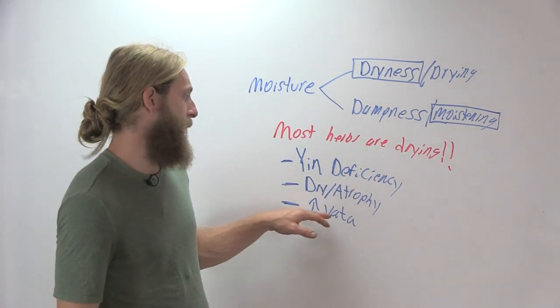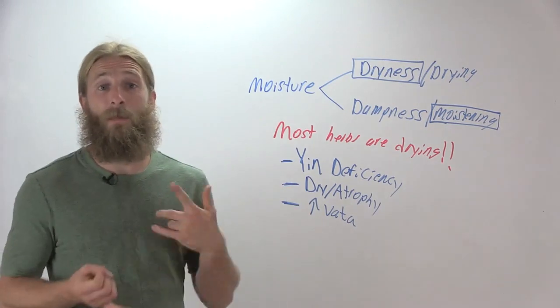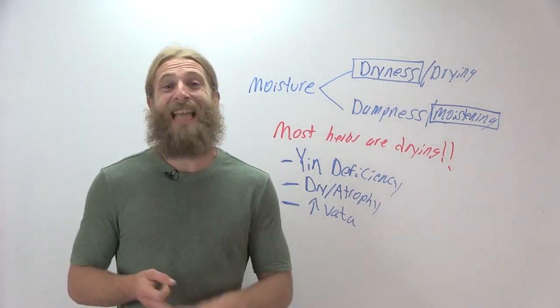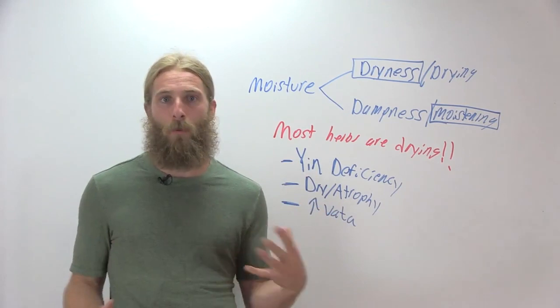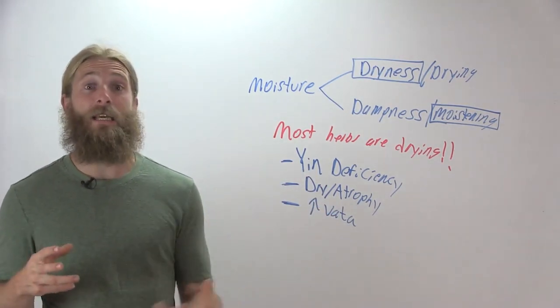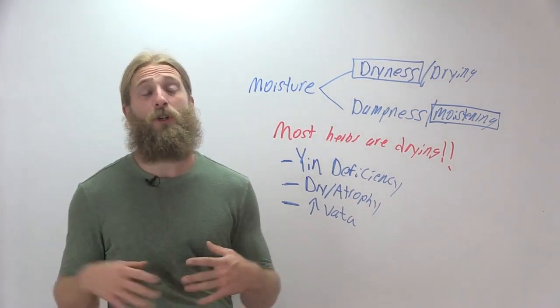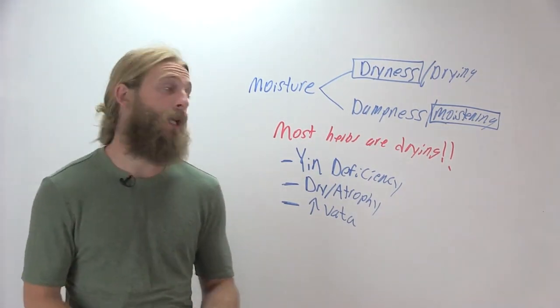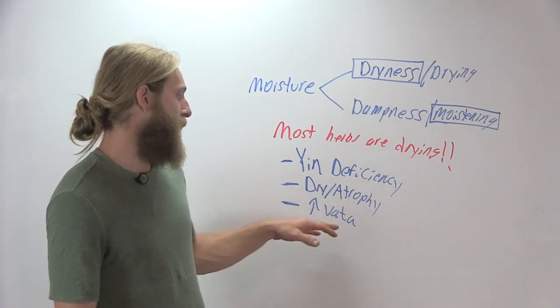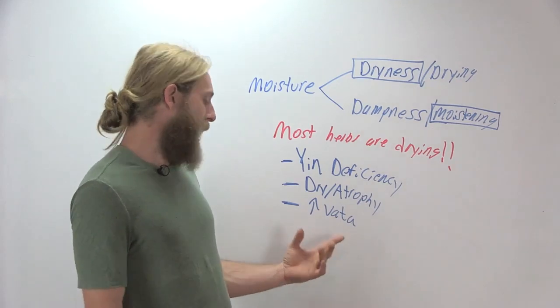Excess vata tends to be cold, dry, tense, light, mobile or mutable, changeable. It's governed by the air and ether elements. And those two elements in the Ayurvedic tradition are said to have a drying action on the body. And the dry atrophy tissue state basically describes vata.